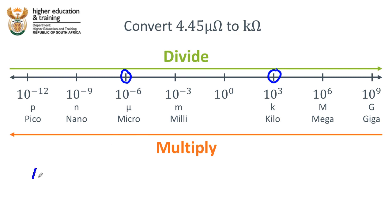4.45 micro ohms. We're going to divide that by 10 to the power of... Well, how many jumps do we need to make? We need to make 6 jumps to get from negative 6 to 0, and then we need to make another 3 jumps to get from 0 to 3. So that's 9 jumps in total. We're going to divide by 10 to the power 9.